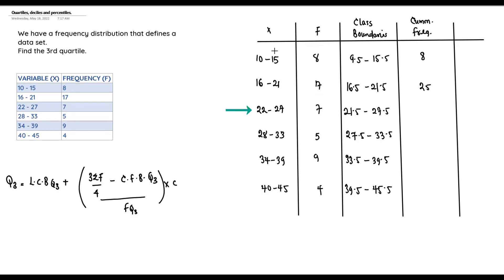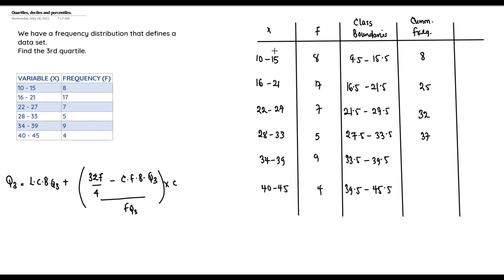For the class 22–27, the cumulative frequency is 8 + 17 + 7 = 32. Continuing, the next cumulative frequencies are 37, then 46, and finally 50. The cumulative frequencies are now complete.